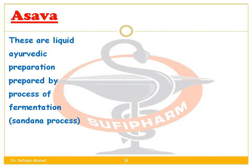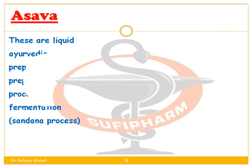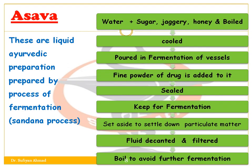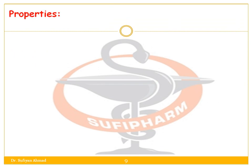Next is Asava. It is similar to Arista in that it is a liquid Ayurvedic preparation prepared by the process of fermentation. In Asava, water, sugar, jaggery, and honey are boiled and then cooled, poured into the fermentation vessel, and fine powder of the drug is added. The vessel is then sealed and kept for fermentation, set aside to allow particulate matter to settle, then the fluid is decanted and filtered.